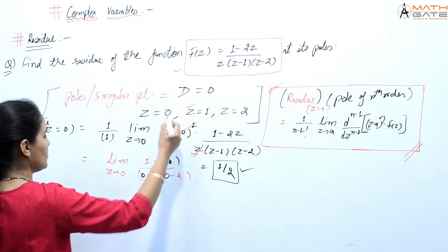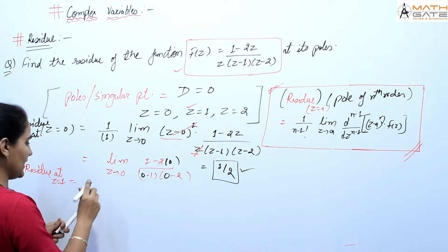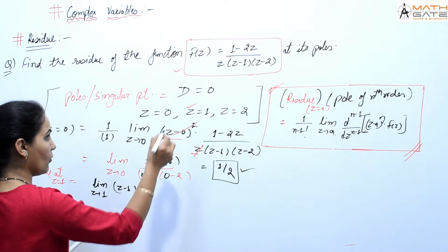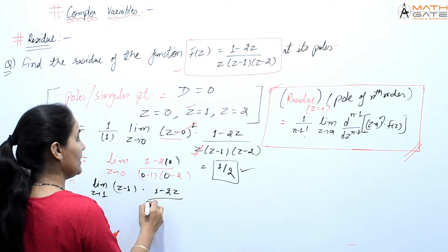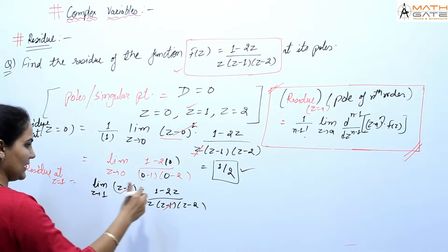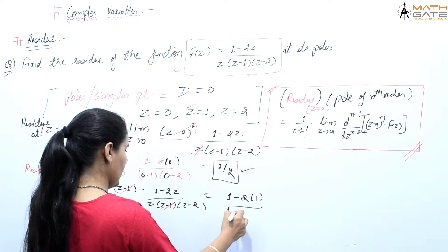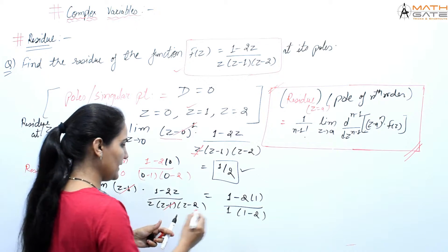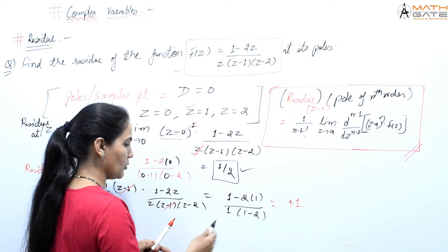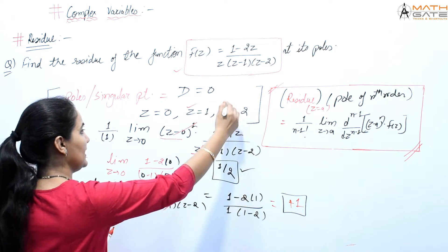Residue at z = 1: Since this is also a single pole, residue = lim[z→1] (z−1) · f(z) = lim[z→1] (z−1) × (1−2z)/[z(z−1)(z−2)]. The (z−1) cancels, giving lim[z→1] (1−2z)/[z(z−2)]. Applying limit: (1−2)/[1×(1−2)] = (−1)/(−1) = 1. So residue at z = 1 is 1.